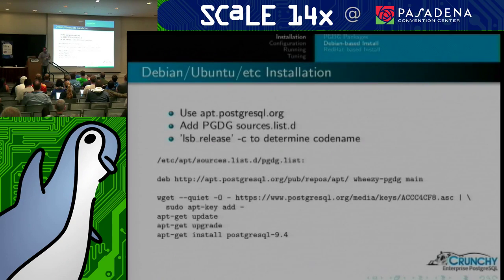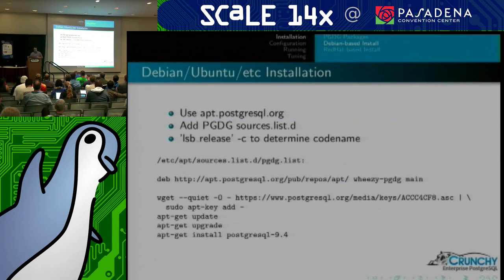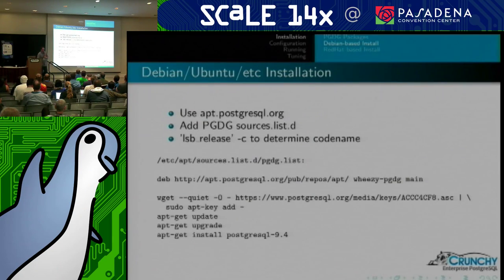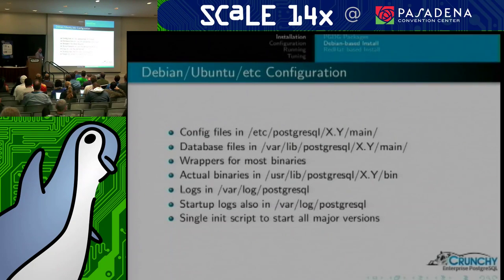On a Debian or Ubuntu-based system, you add apt.postgres.sql.org into your sources list. You can use LSB release if you want. It's pretty straightforward — just apt-get. This is with 9.4, but 9.5 is out now, so just changing that to 9.5 should work fine and that'll pull in the latest version.